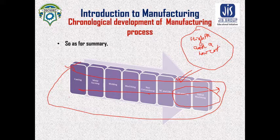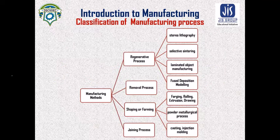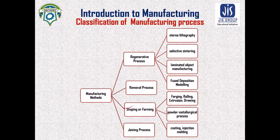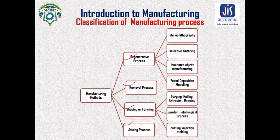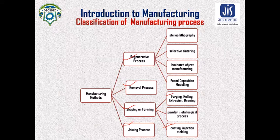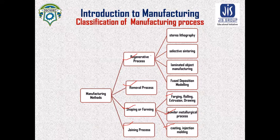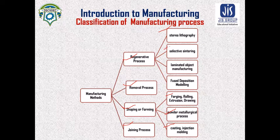The manufacturing method is classified into four main broader ways: shaping and forming, removal processes, joining processes, and regenerative processes. Shaping and forming is further divided into casting, injection molding, forging, rolling, extrusion, drawing, powder metallurgical processes, and regenerative processes such as stereolithography, selective sintering, laminated object manufacturing, and fused deposition modeling.